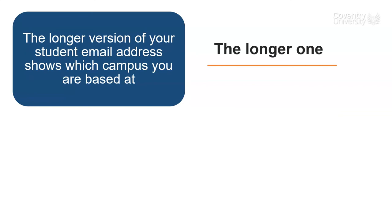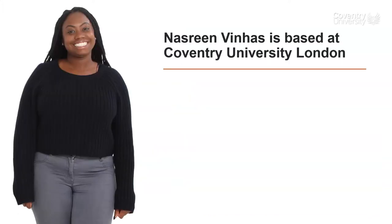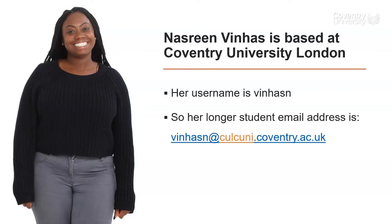The longer one actually depends on which campus you are based at. Dave is based at the main campus in Coventry, so his email address has 'uni' in it: BloggsD23 at uni.coventry.ac.uk. Another example: Nazarene Vinhass is based at Coventry University London, so her username is VinhassN. Her longer student email address, because she's at Coventry University London, has CULC Uni in the middle: VinhassN at culkuni.coventry.ac.uk.